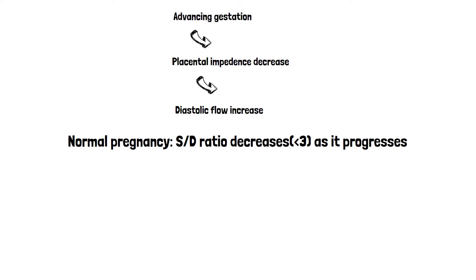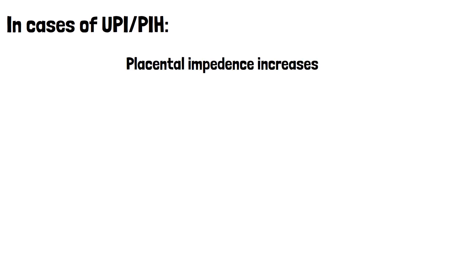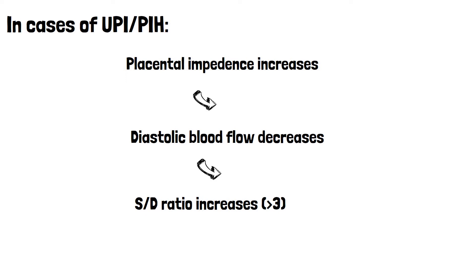In uteroplacental insufficiency or pregnancy-induced hypertension, placental impedance increases, diastolic flow decreases, and the S/D ratio increases to more than 3. In PIH, resistance increases, causing diastolic blood flow to decrease. The denominator therefore decreases, and the ratio increases to more than 3.